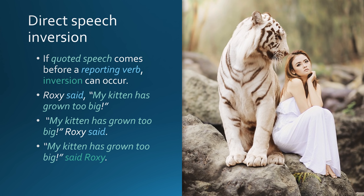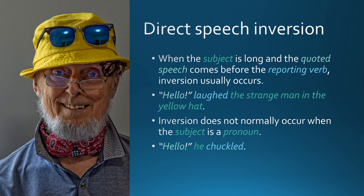Direct speech inversion: if quoted speech comes before a reporting verb, inversion can occur. 'Roxy said, my kitten has grown too big' — 'My kitten has grown too big, said Roxy.' When the subject is long, inversion usually occurs: 'Hello, laughed the strange man in the yellow hat.' Inversion doesn't normally occur when the subject is a pronoun: 'Hello, he chuckled.'